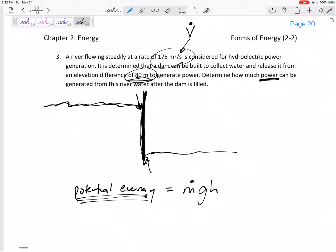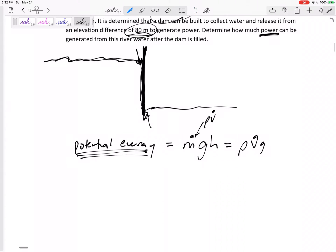So how much potential energy, how much m dot g h? Did it give us m dot? No, it gave us V dot though. But you know that m dot is rho V dot, so rho V dot g h.